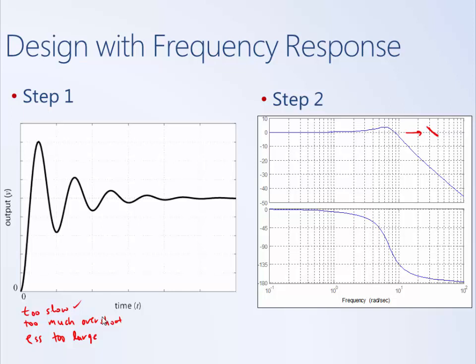Now let's look at the overshoot requirement — we want to bring the overshoot down. One thing to look at is the resonant peak; we may want to bring that down. Another thing is the system's phase margin, which is how far above minus 180 degrees the phase is at the gain crossover frequency. So we want to increase the phase margin, and in particular bring it up at the system's new gain crossover frequency, which may be pushed out.